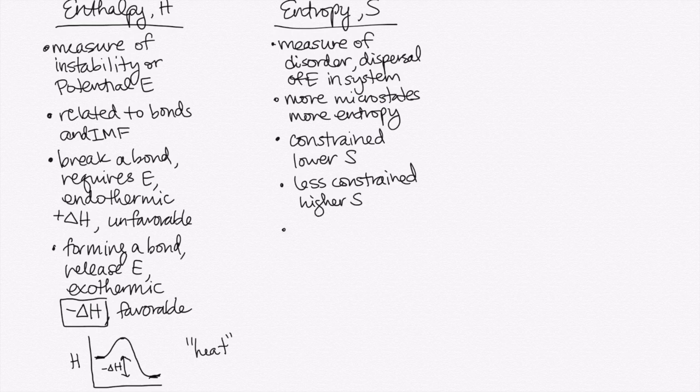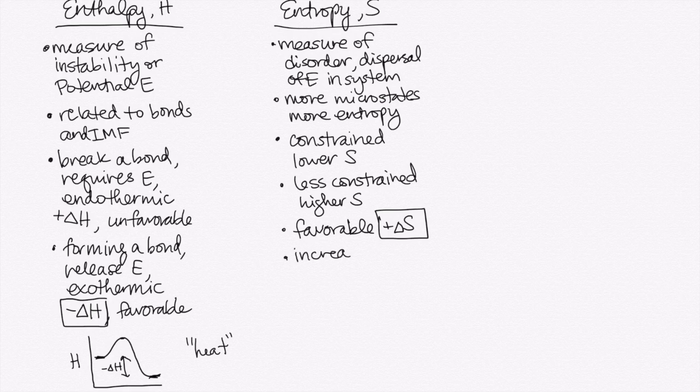And for processes, it's favorable to have a positive delta S. That helps contribute to spontaneity. And the ways that we can increase entropy are going to be by heating the system up or raising the temperature.